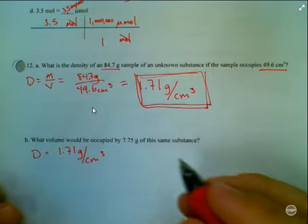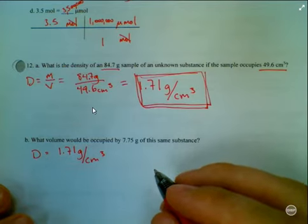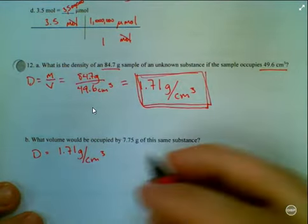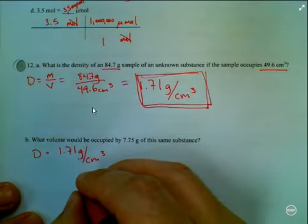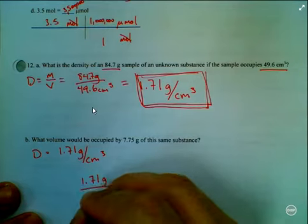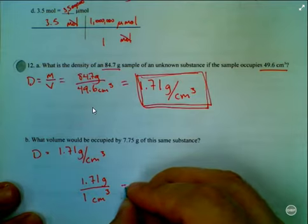And so the equation I'm going to use here is this is to this as that is to that. So I'm going to use that basic setup. So 1.71 grams is to one cubic centimeter as 7.75 grams is to x cubic centimeters.